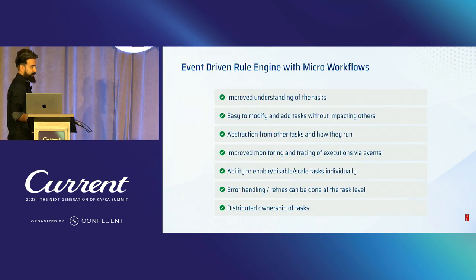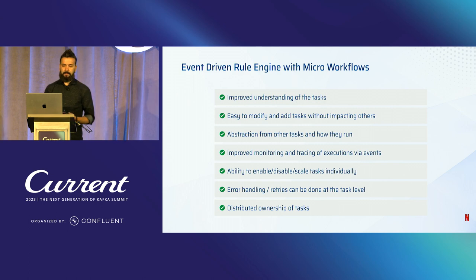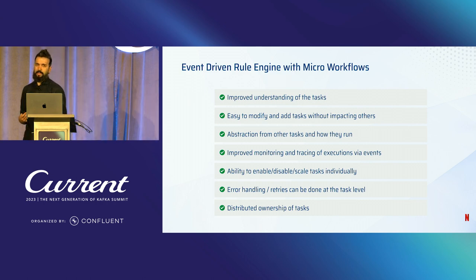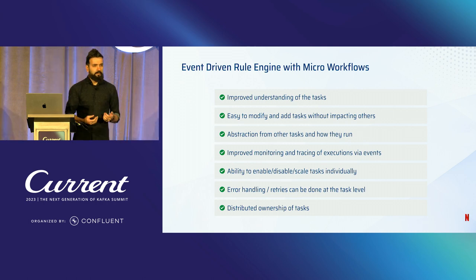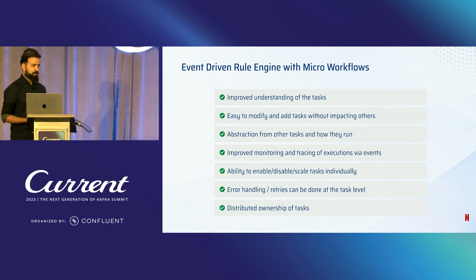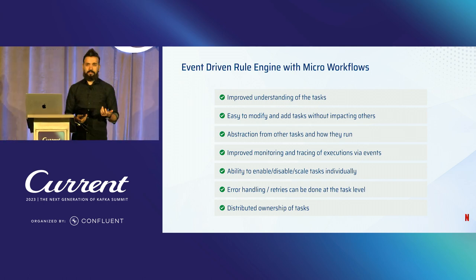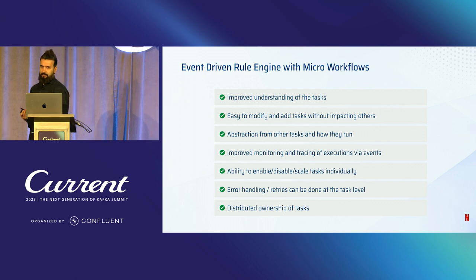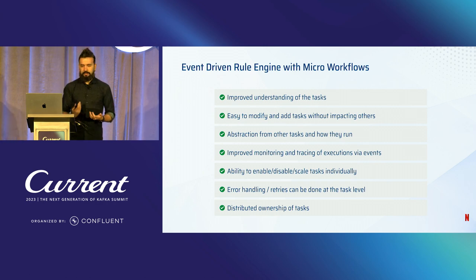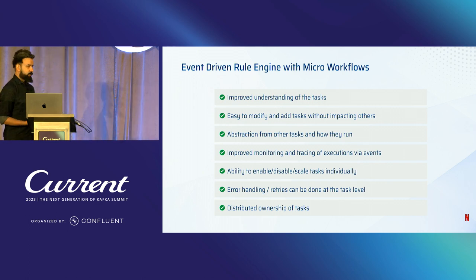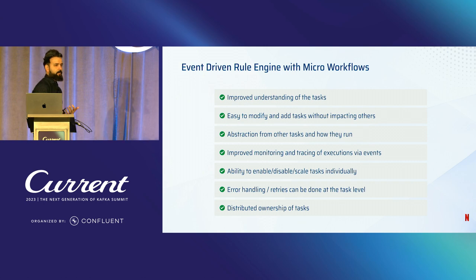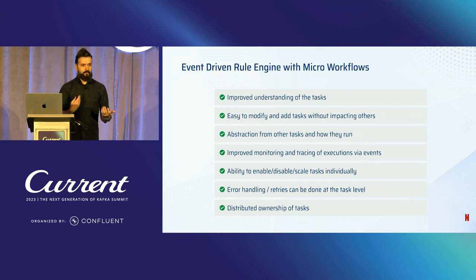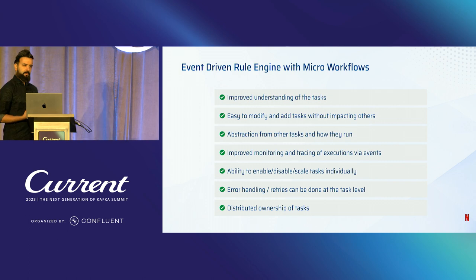By doing this, we've increased the understandability of the tasks. Loose coupling makes it easy to add new tasks or update existing ones without impacting others. Abstraction helps with improved monitoring. Each task can be scaled and debugged independently, allowing for distributed ownership. If one task fails, the other tasks won't be impacted — the only impact may be latency while someone debugs that issue, but there is no single point of failure.